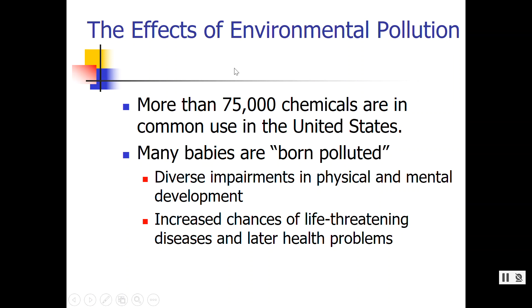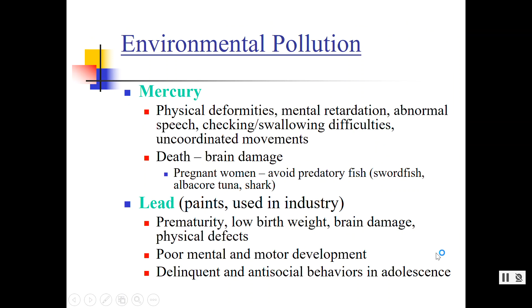Environmental pollution is significant — there are more than 75,000 chemicals used in the U.S., so we're born already exposed to these things, and it's very difficult to stay away. Exposure can lead to physical and mental issues and life-threatening issues later on. Mercury is one example — pregnant women are advised to stay away from predatory fish because those often carry mercury. Lead, found many times in paint in older homes, can also cause severe issues with an infant when they're born.